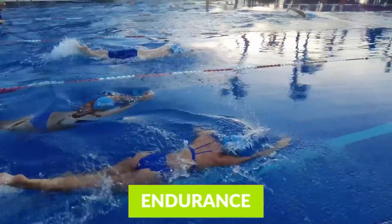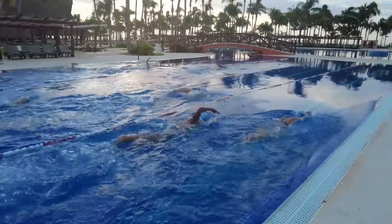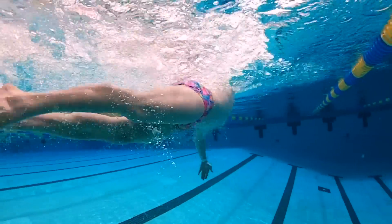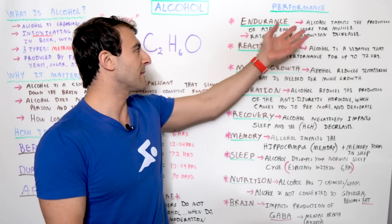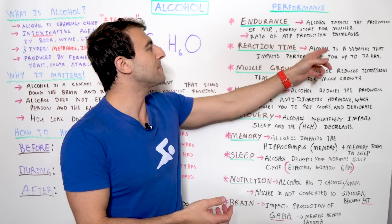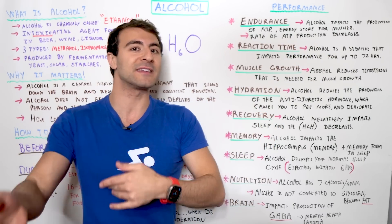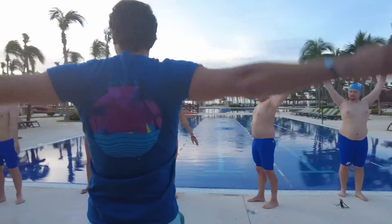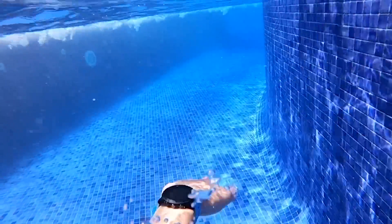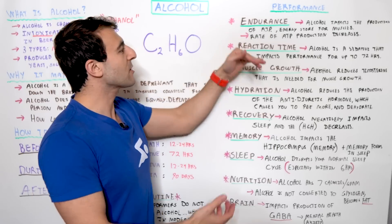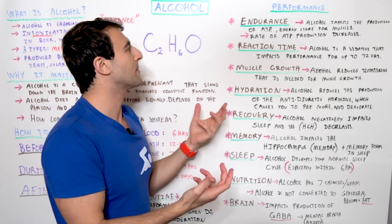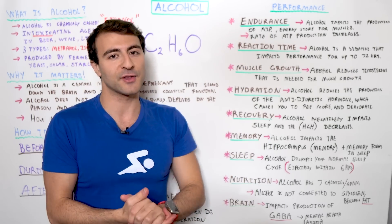In terms of endurance, alcohol can actually impact the production of ATP — adenosine triphosphate — which is the energy store for muscles. The rate of ATP production actually decreases. So if you're trying to do something aerobic that requires endurance, alcohol can reduce the rate at which ATP is developing inside your body, and it's going to take a hit on your endurance.